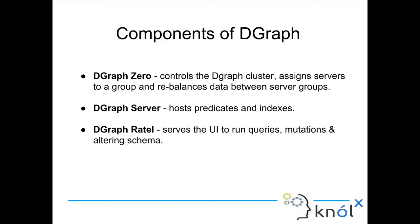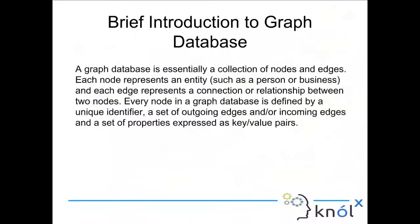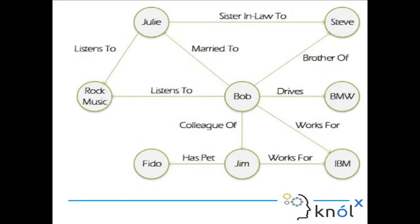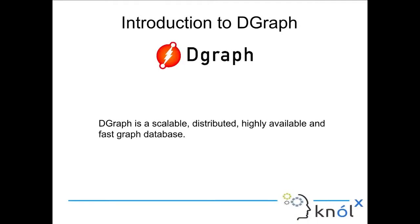Predicate is a term from triples. A triple consists of a subject-predicate-object relationship, SPO. In my example, Julie would be the subject, 'sister-in-law to' would be the predicate, and Steve would be the object. DGraph Zero maintains the cluster and each server is given responsibility for one group of predicates.